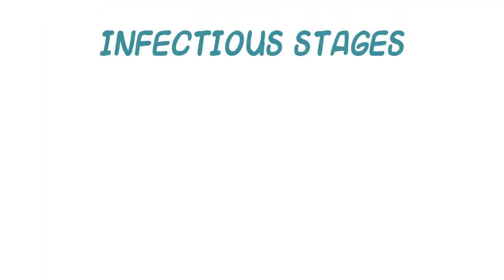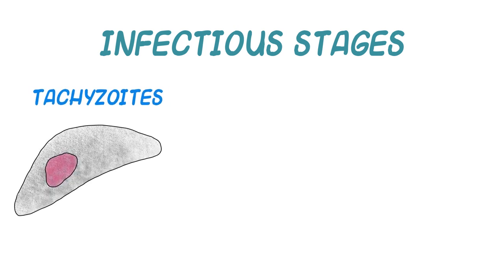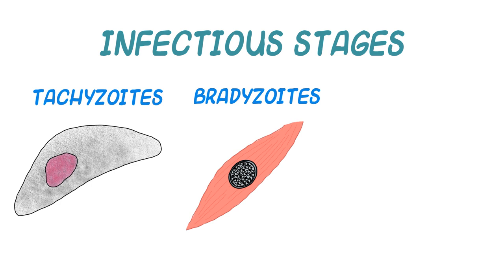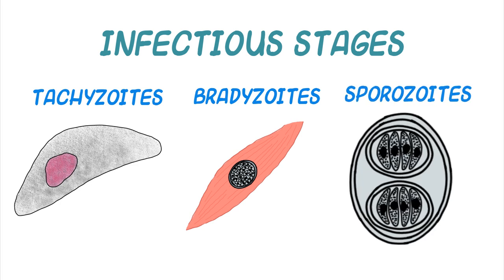There are three infectious stages of T. gondii: tachyzoites, a rapidly multiplying form; bradyzoites, a tissue cyst form; and sporozoites, which exist in oocysts. More on the life cycle later.